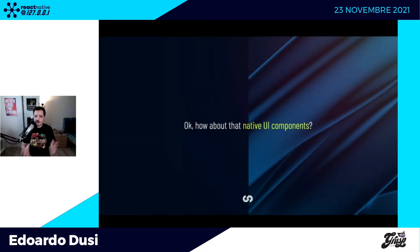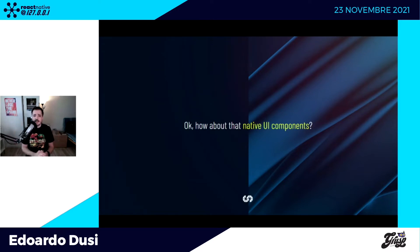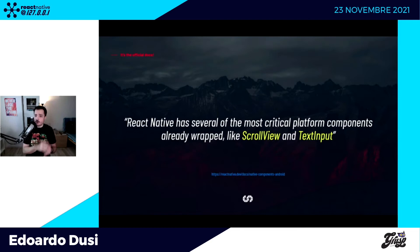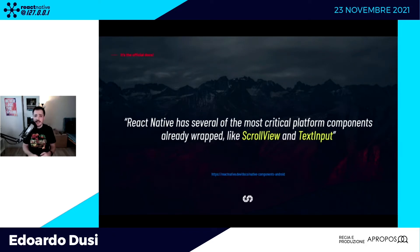Abbiamo il nostro JavaScript che viene interpretato: dobbiamo mostrare dei componenti. Ci sono dei componenti JavaScript scritti nel markup e quegli elementi fanno riferimento agli elementi UI nativi. A runtime React Native crea gli elementi corrispondenti Android e iOS per i componenti React che scrivete. Nel core di React Native ci sono già un gran numero di componenti critici, come ScrollView, i TextInput e molti altri. React Native traduce la vostra istruzione nell'istanziare uno di questi componenti al main thread.